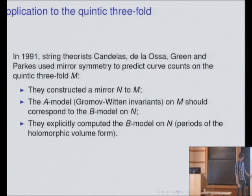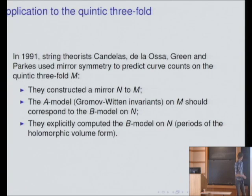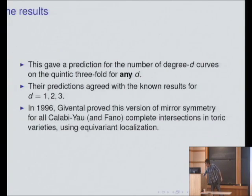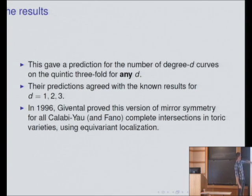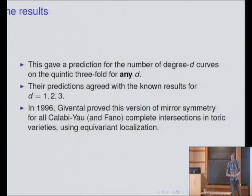This is something you can actually compute explicitly — periods of the holomorphic volume form — something that's studied and has lots of nice structure. Being physicists, they just wrote it down and said this gives predictions for what the A model of the quintic threefold should be.